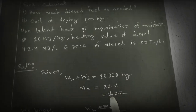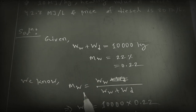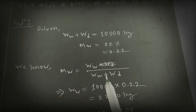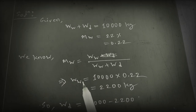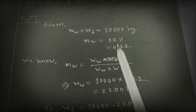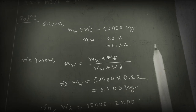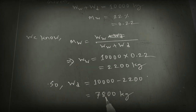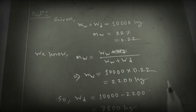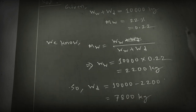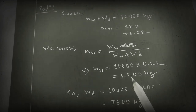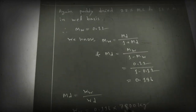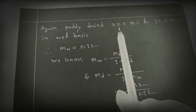Using MW equals WW divided by (WW plus WD) with MW equals 0.22 and total weight 10,000 kg, we get WW equals 2200 kg and WD equals 7800 kg. So initially there are 2200 kg of moisture and 7800 kg of solid matter in 10 tons of rice.